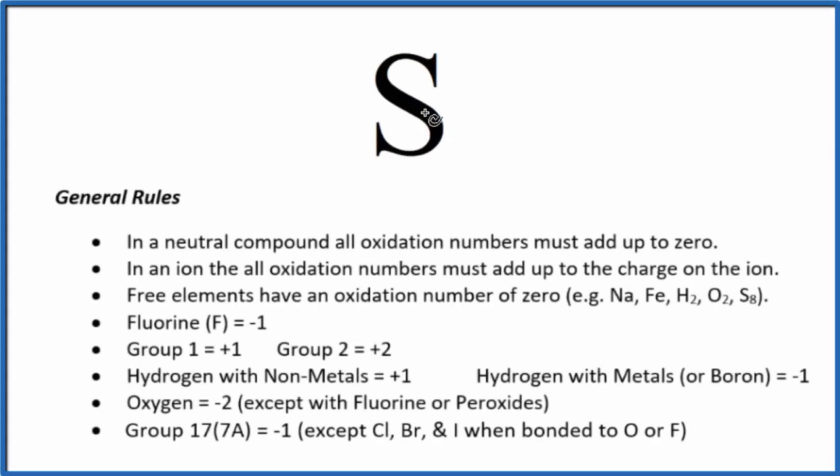In this video we'll look at the oxidation numbers for sulfur. When we talk about oxidation numbers, we're talking about a change in the oxidation state. Since we just have sulfur by itself here, there's no change. A free element like sulfur has an oxidation number of zero.